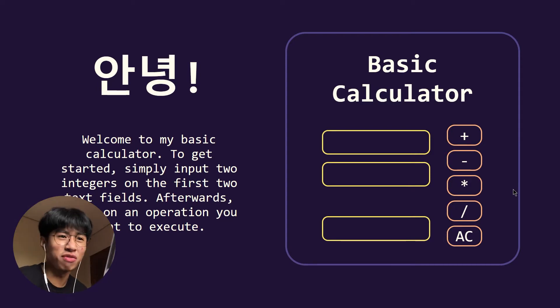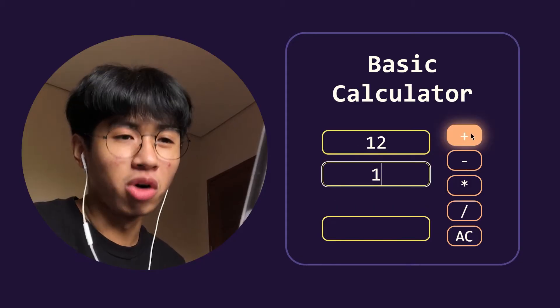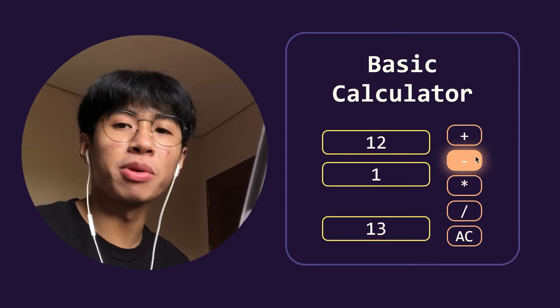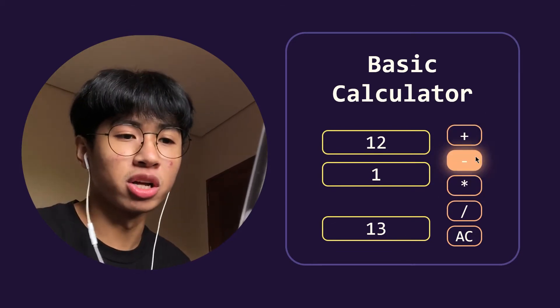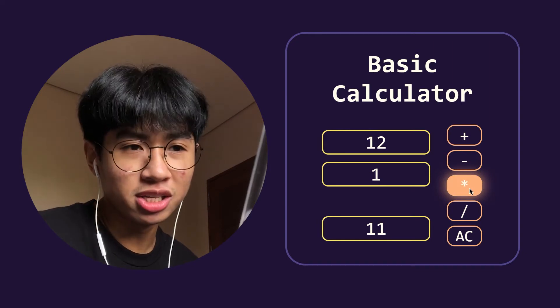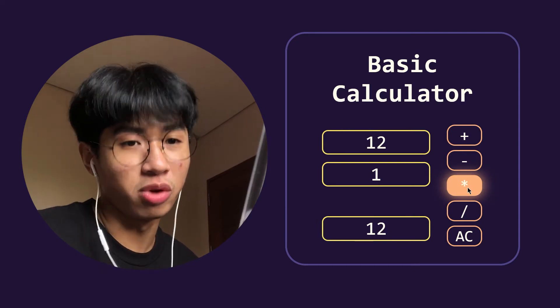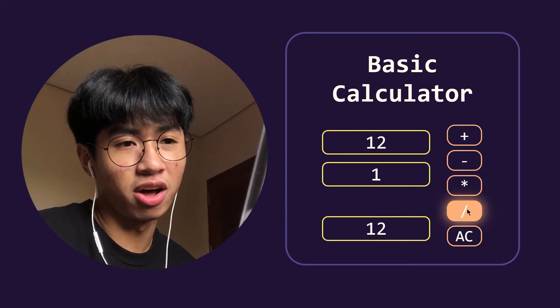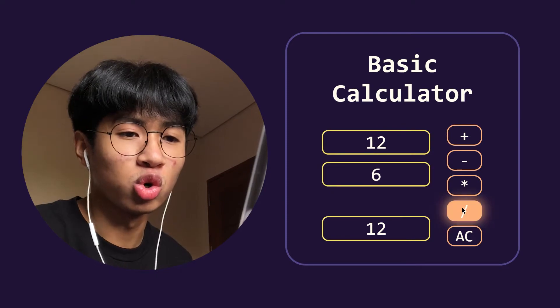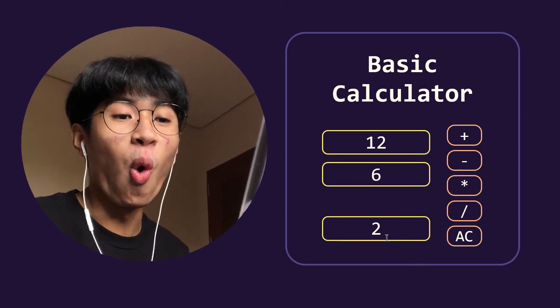JavaScript. There are variables involved. Let's try other operations. 12 plus 1 is 13. 12 minus 1 is 11. 12 times 1 is 12. Let's divide — let's try 6, it should be 2. Wow!